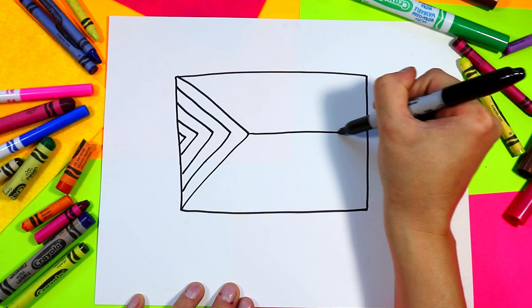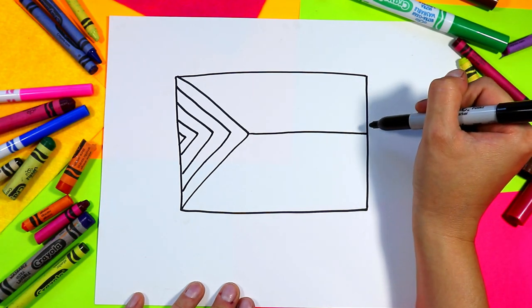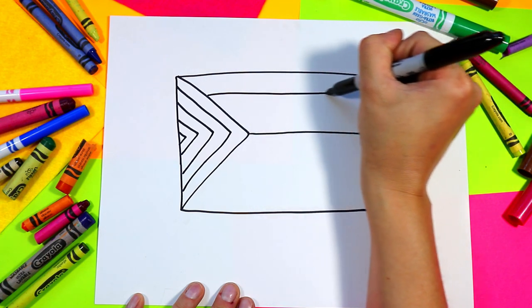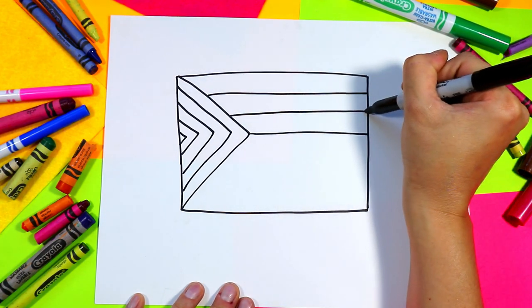We're gonna draw one line across from that point, just across. Next we're gonna divide this section up into three sections by adding two lines.